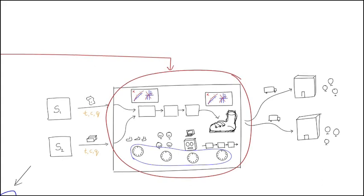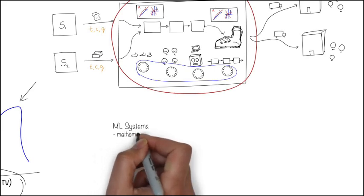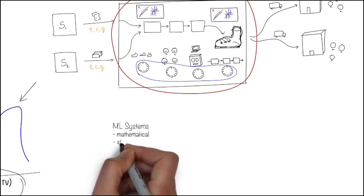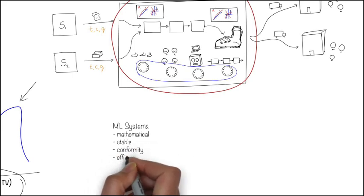Here are some characteristics of machine learning systems. It can be mathematically modeled, is relatively stable, and operates within the bounds of some strict conformity, is efficient, and is mostly a black box where you don't have to understand the internals.